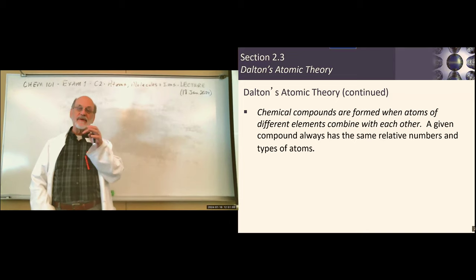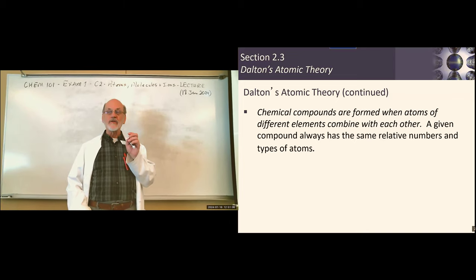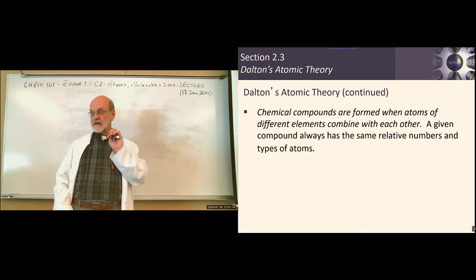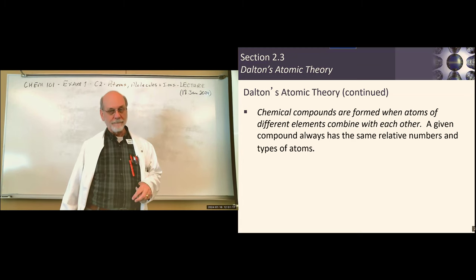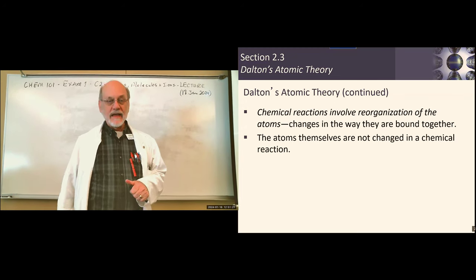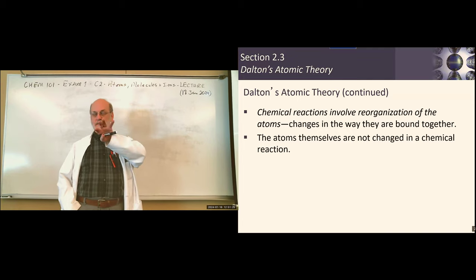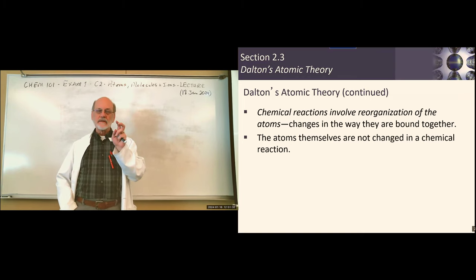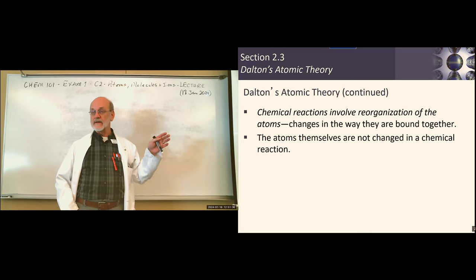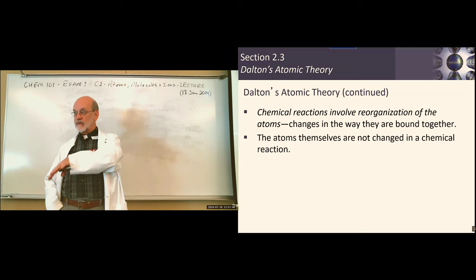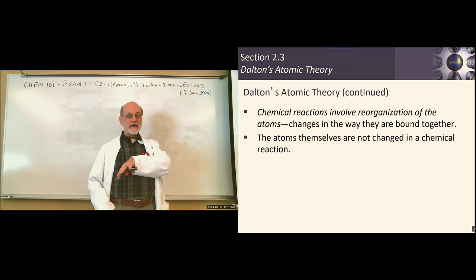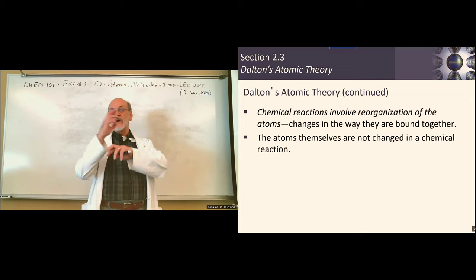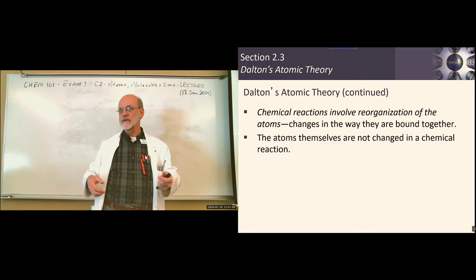We form compounds from combinations of these atoms — not just mass relationships, but specific numbers of different elements combined in certain ratios. Dalton also explained that when reactants combine to form products, the mass of the products equals the mass of the reactants because you haven't created or destroyed any atoms. All the atoms are still there — they just rearrange. They switch dance partners — that's all a chemical reaction is.